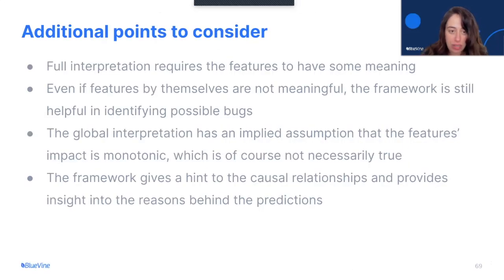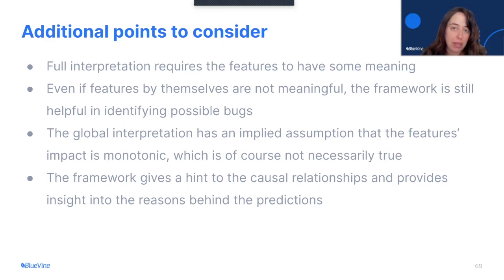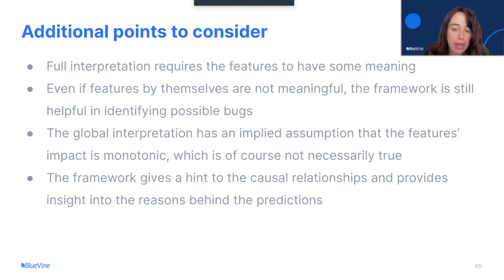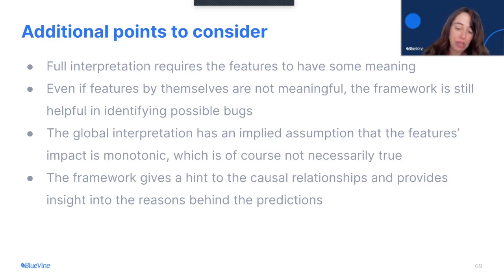Some additional points to consider: full interpretation requires the features to have some meaning. In this talk, we are working with a model of clients' behavior, so the features themselves are inherently meaningful. But even when features are not meaningful by themselves, the framework is still helpful in identifying possible bugs. Also, the global interpretation has an implied assumption that the feature impact is monotonic, which is of course not necessarily true. But the framework does give a hint to the causal relationship and provides insight into the reasons behind the prediction.